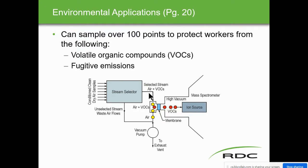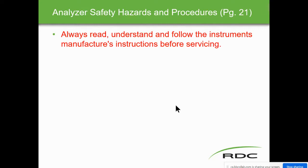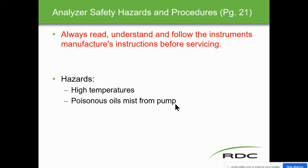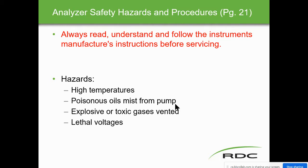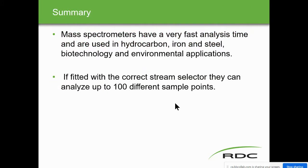Process monitoring applications on page 19: hydrocarbon processing — mass specs often replace chromatographs and are used to measure hydrocarbon and inorganic gases in natural gas, refinery, and petrochemical plants, because mass specs are much faster than chromatographs. Iron and steel production — they measure gases above the molten steel to control quality. Biotechnical — they measure concentration of gases above liquid contained in fermenters and bioreactors. Environmental applications — mass specs can sample up to 100 points and protect workers from volatile organic compounds (VOCs) and fugitive emissions.